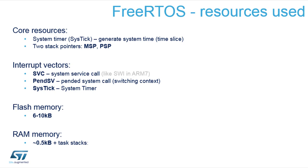What FreeRTOS requires from you when you implement it on a microcontroller is not much, but it's still enough to do all the tasks you expect from FreeRTOS. When you implement FreeRTOS, it will allocate the system timer and use it as a periodic time base. Typically you can set up your own frequency for the time base, but the shortest time you can use is defined as one millisecond.